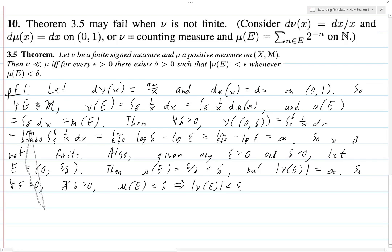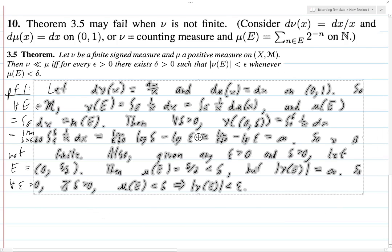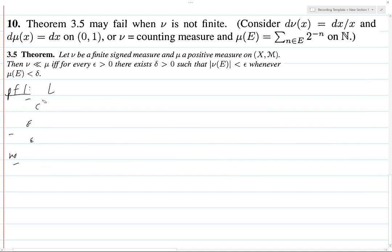So, that takes care of the first problem, and now, let's look at the next one. So, this is going to be proof 2. Here, let ν be the counting measure, and μ(E) be the sum for all N in E of 2 to the minus N on the natural numbers N.